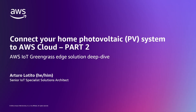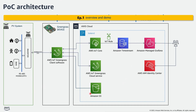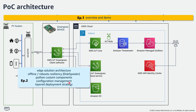Hi everyone, thank you for watching this video. My name is Arturo Lotito and I am a Senior IoT Specialist Solutions Architect at AWS. This is episode 2 of a video series presenting a proof of concept to connect and monitor a home photovoltaic system to the AWS cloud. In episode 1 we discussed the architecture of the POC and we saw a demo using AWS IoT Greengrass running on a Linux-based device to collect data from the photovoltaic inverter, send it to AWS IoT Core over a basic ingest topic, an IoT rule to route the data to Amazon Timestream, and Amazon Managed Grafana for visualization.